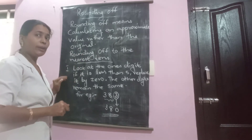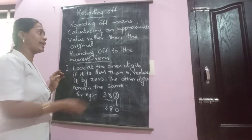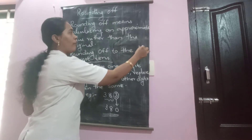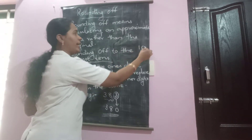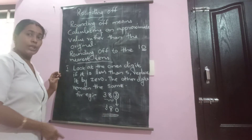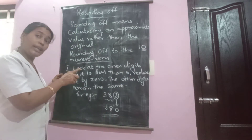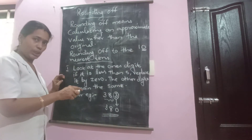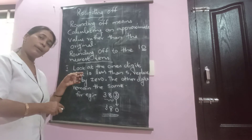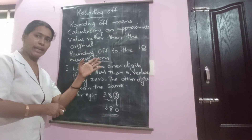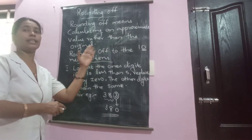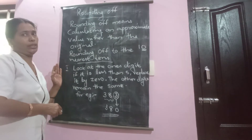Why replace by zero? Because tens means how do you write ten? One and zero — the ending number is zero. So replace the one's digit by zero. And if the number is less than five, the remaining digits have no change.